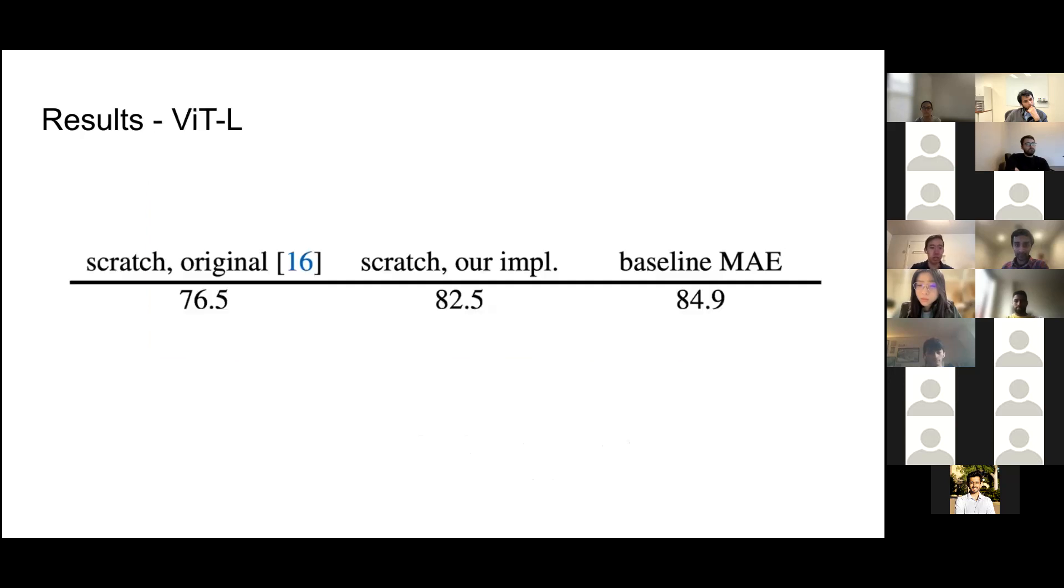These are some basic results from the paper. The left column is training from scratch on the original vision transformer. The second is with the author's implementation of the model. And the third is using their masked autoencoder technique. We see that there is an increase, as you would hope to see, from this self-supervised pre-training technique.